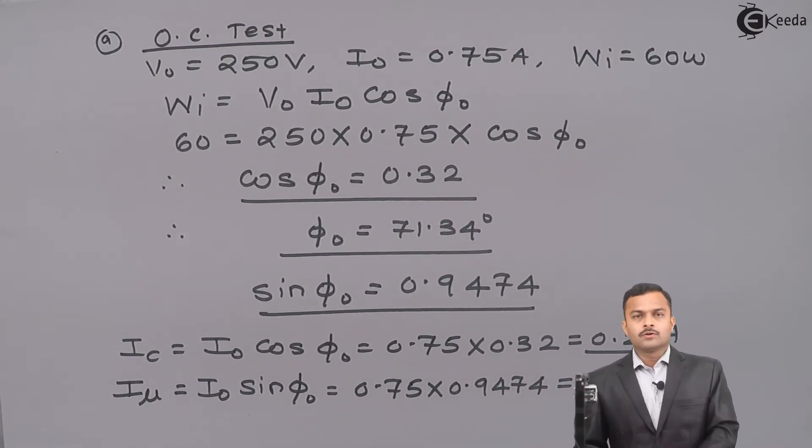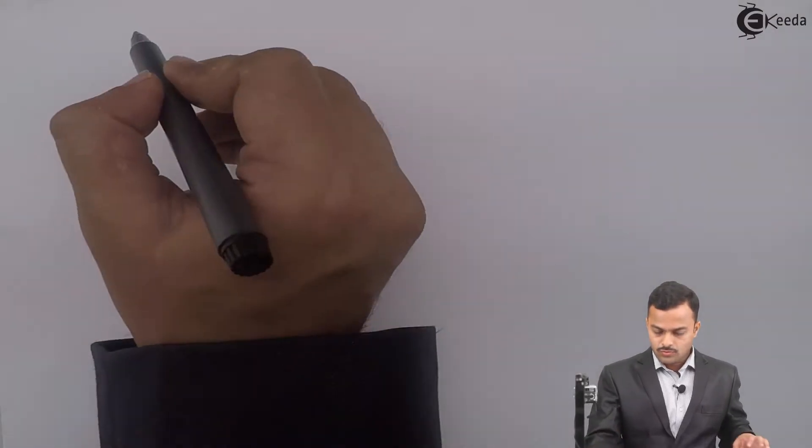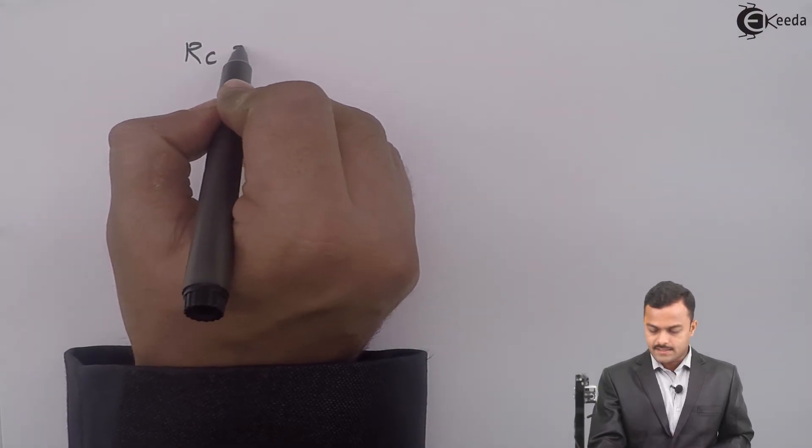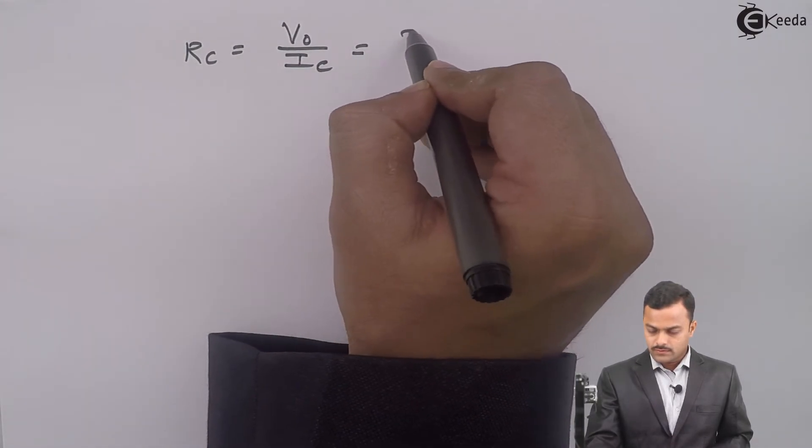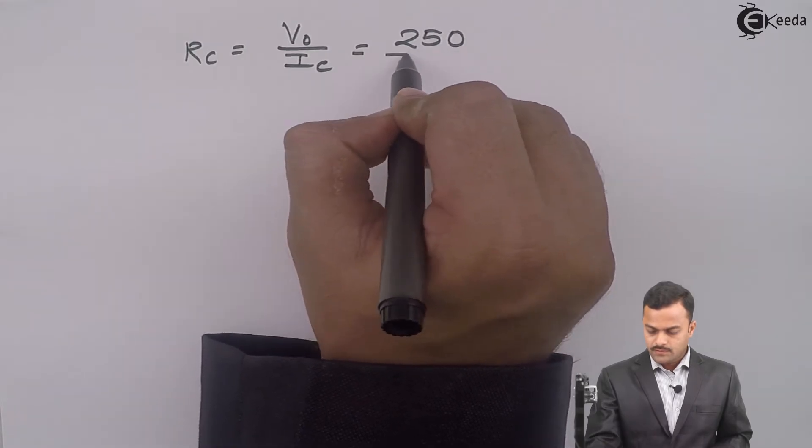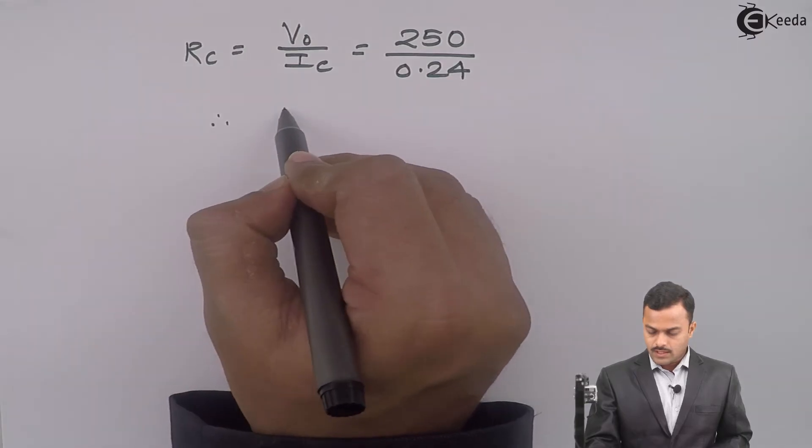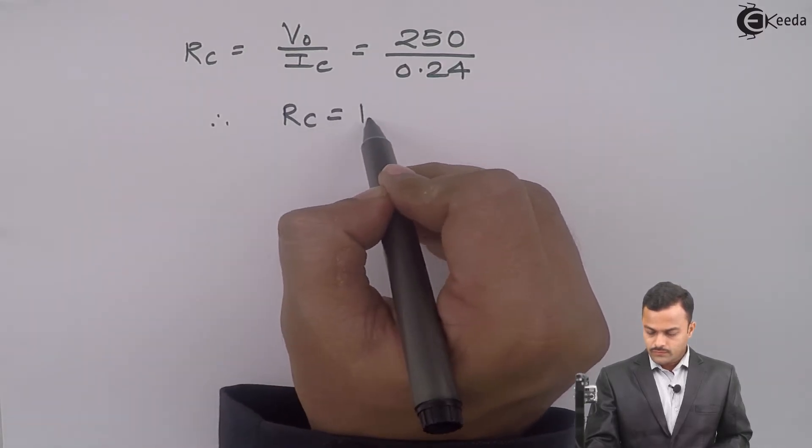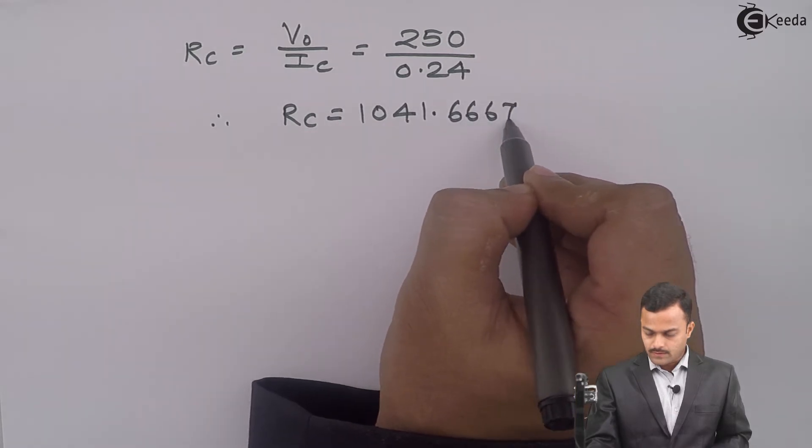Now we got IC and Iμ. From IC and Iμ, we can calculate RC and XM. Core loss resistance RC is V0 by IC. So it is 250 upon 0.24, RC equals 1041.6667 ohm.